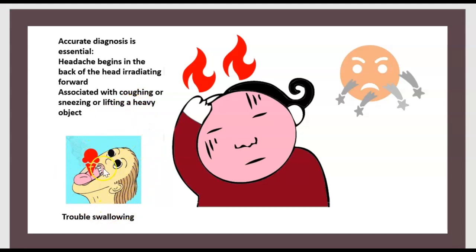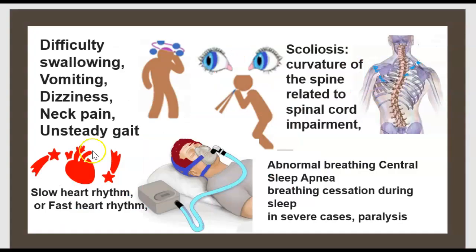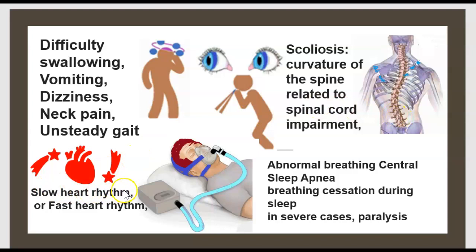Other symptoms include trouble swallowing, vomiting, dizziness, neck pain, unsteady gait, and scoliosis — a curvature of the spine related to spinal cord impairment. There can also be slow heart rhythm (bradycardia) or fast heart rhythm (tachycardia), abnormal breathing, central sleep apnea — breathing cessation during sleep — and in severe cases, paralysis.